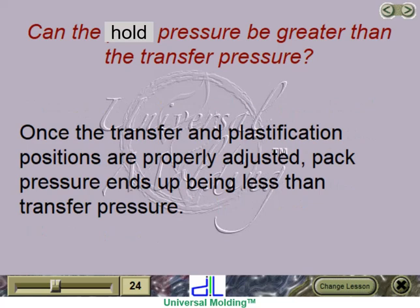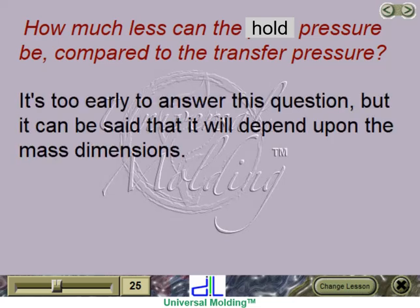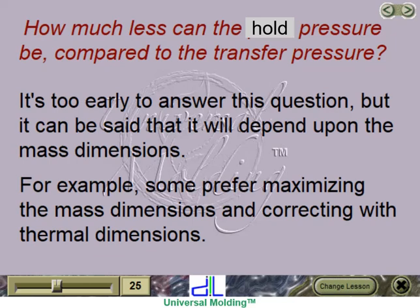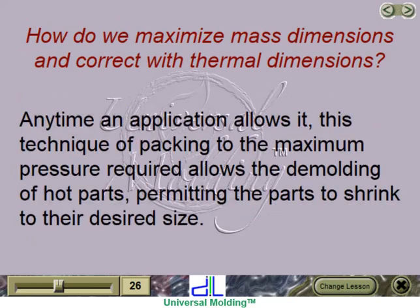Once the transfer and plastification positions are properly adjusted, pack pressure ends up being less than transfer pressure. How much less? It depends upon the mass dimensions. Some prefer maximizing the mass dimensions and correcting with thermal dimensions. This technique of packing to the maximum pressure required allows the demolding of hot parts, permitting them to shrink to their desired size.